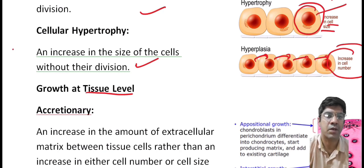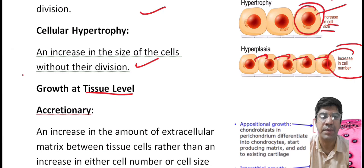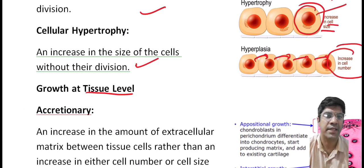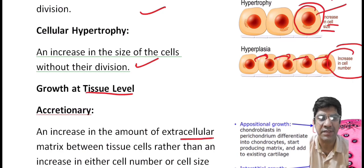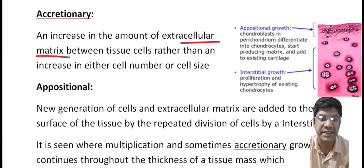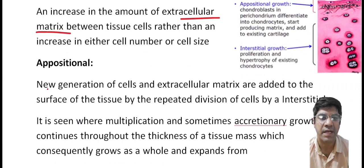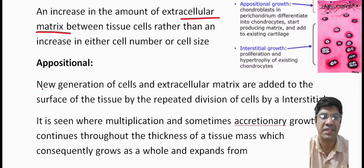At the tissue level, growth can be of various types. The first is accretionary growth, which means an increase in the amount of extracellular matrix found between tissue cells. Instead of a change in cell number or cell size, when there is an increase in the amount of extracellular matrix between tissue cells — as in connective tissue — that type of growth is accretionary growth.